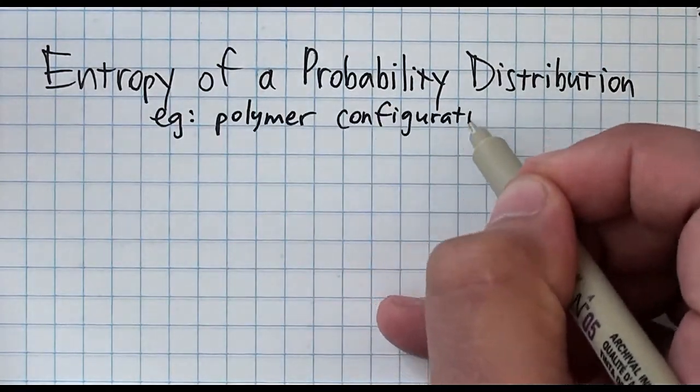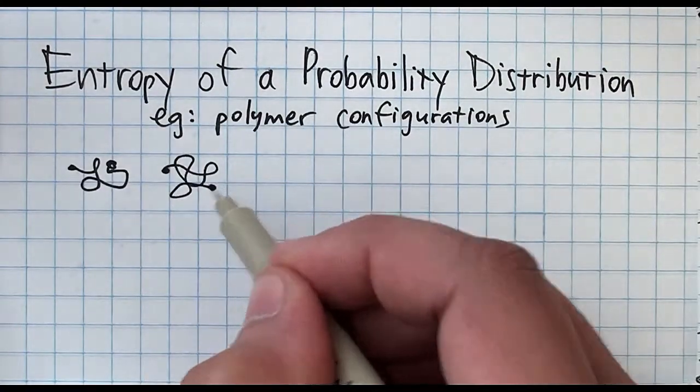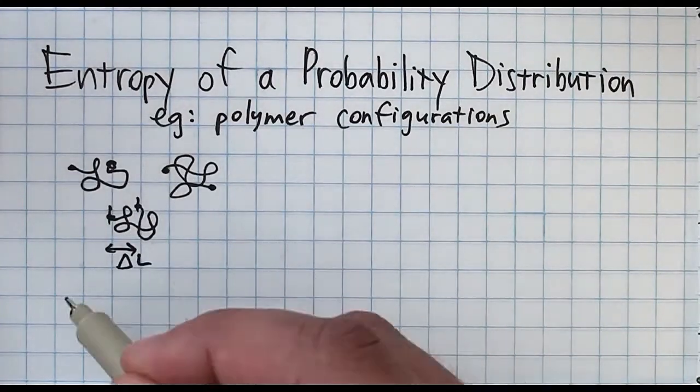This statement allows us to be more quantitative about the types of intuitive comparisons we saw in Chapter 2 of Dale and Bromberg.